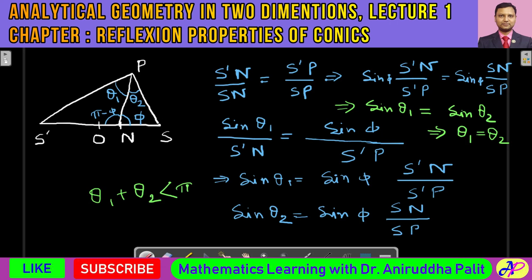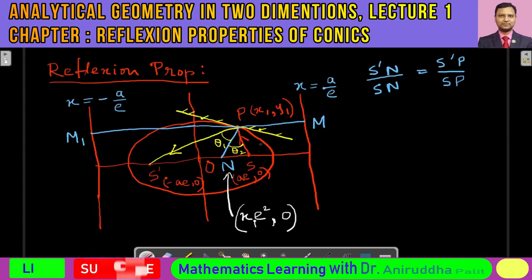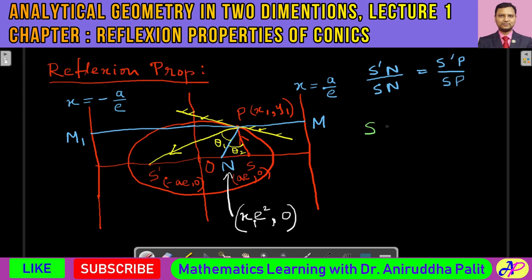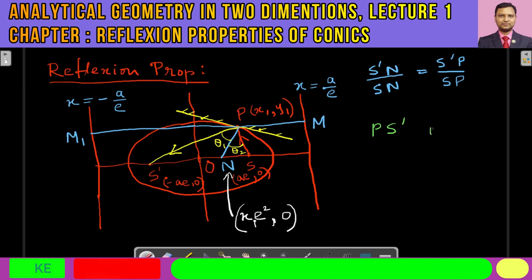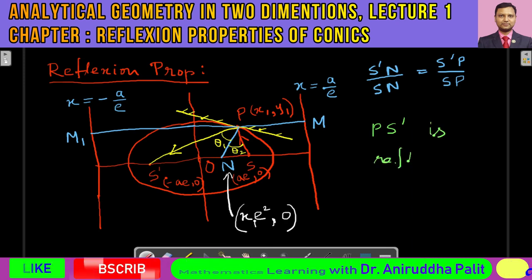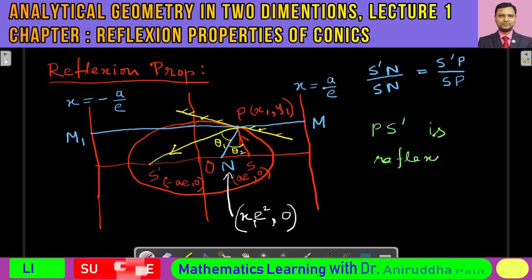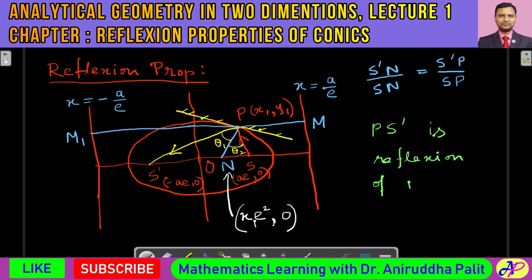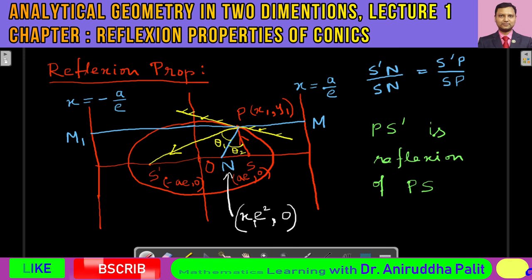We got the relation that θ1 equals θ2. That means if you can prove θ1 equals θ2, you can say that PS prime is actually the reflection of PS along the tangent — in other words the tangent at P. This is the reflection property of an ellipse. So that's all for this lecture. Thank you for being with us.